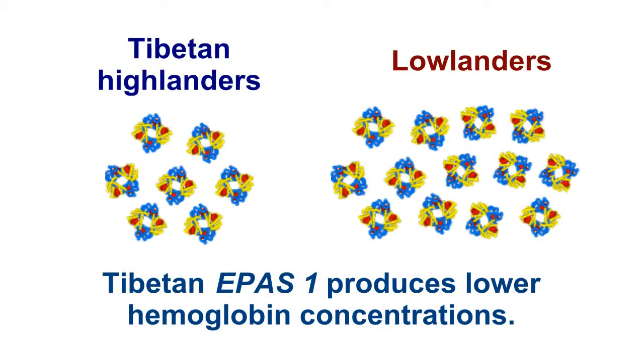When we correlate the genotypes at those mutations with the physiological measurements, such as hemoglobin concentration, we find that the most frequent genotypes tend to have hemoglobin concentrations that are lower. That makes sense from what we know about the Tibetans' response to high-altitude. They do not tend to increase hemoglobin concentration.